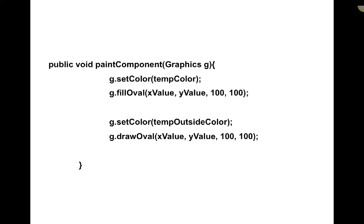Here's another example. It's a public method with a return type of void, meaning it doesn't return anything. The name of the method is paintComponent and it takes a Graphics parameter called g locally. Inside of this method it does several things to the graphics object: sets the color, fills the oval, sets the color, draws the oval. But it doesn't return anything — it just does something, and once all these lines are done executing it returns back to where this method was originally called.